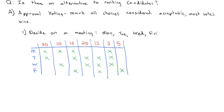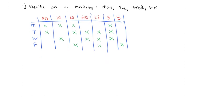This is indicating their approval. They might have a preference, but the preference doesn't matter. We're just marking what's acceptable so that we can get the biggest consensus for a meeting time. When we tally up our votes for Monday, Monday's got 30 plus 10 plus 15 plus 5, so we've got 60 approvals for Monday.